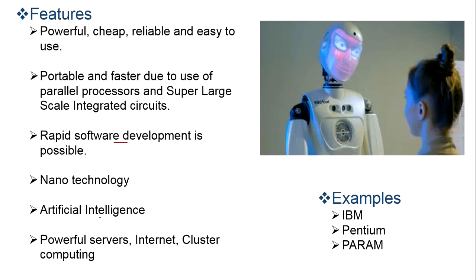Nanotechnology and artificial intelligence are used in daily life. Drones are used for video shooting. Internet service is very powerful and cluster computing is used. Examples include IBM, Pentium, and Param, etc.